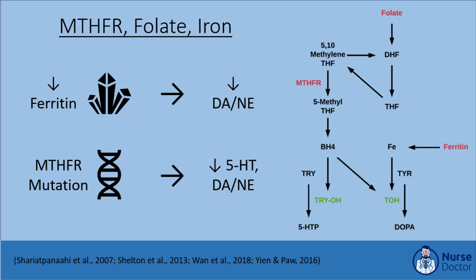MTHFR polymorphism can be identified through genetic testing that typically also incorporates an analysis of the cytochrome P450 pathway. In this population, treatment with 7.5 to 15 mg of L-methylfolate results in a statistically significant improvement in depression symptoms over an average of 3 months of treatment. Some studies suggest these patients respond better to L-methylfolate if C-reactive protein is elevated, suggesting an underlying inflammatory phenomenon further explained by the inflammatory hypothesis of depression.